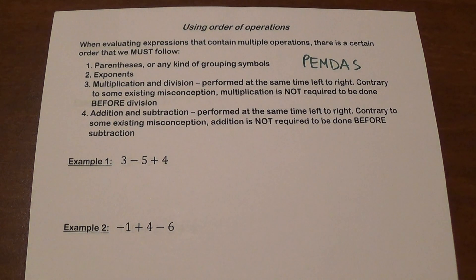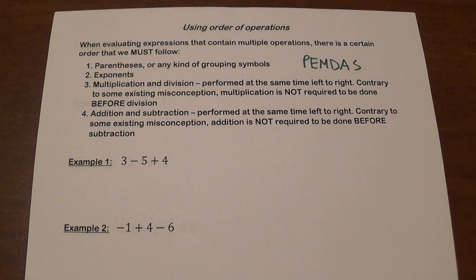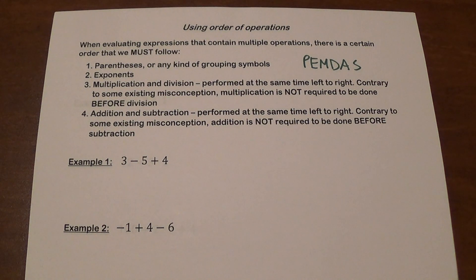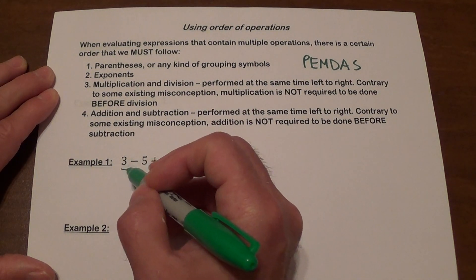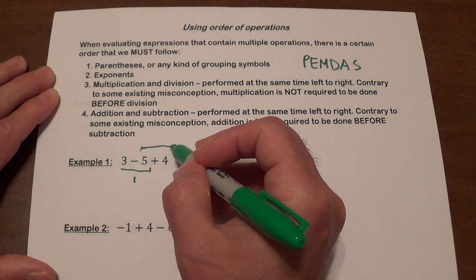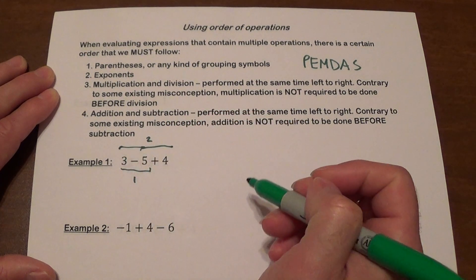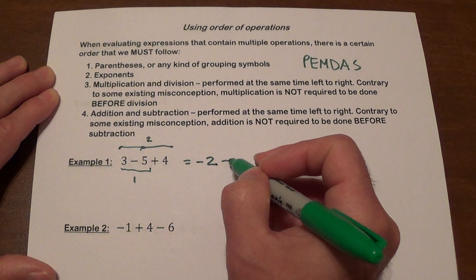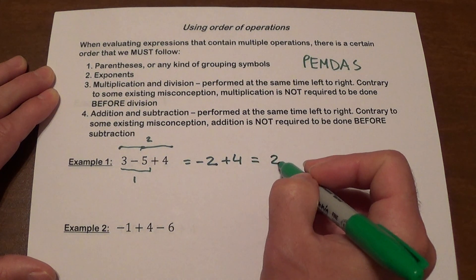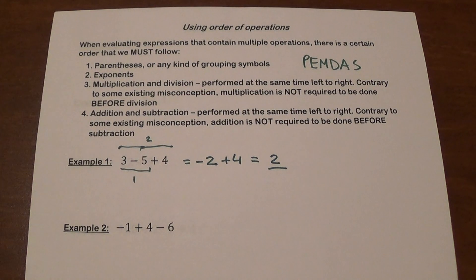Example 1 is 3 minus 5 plus 4. We have no parentheses, no exponents, and no multiplication or division, so we are limited to addition and subtraction. We do it left to right: 3 minus 5 is negative 2, then negative 2 plus 4 gives us 2 as our final answer.